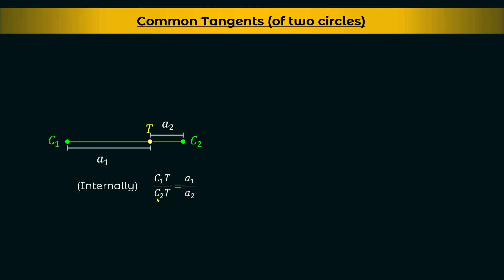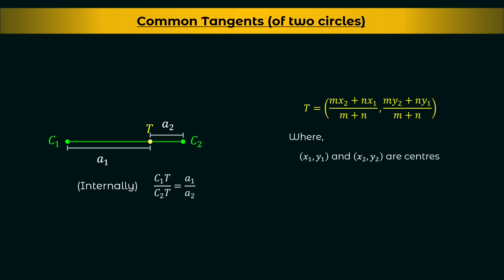For this we use the section formula for dividing internally, that is: (m·x2 + n·x1) / (m + n) and (m·y2 + n·y1) / (m + n). This is the same as before but with plus instead of minus — when dividing externally we use minus and when dividing internally we use plus. Here x1, y1 and x2, y2 are the centers C1 and C2 respectively, and m : n is A1 : A2, the ratio of the radii.